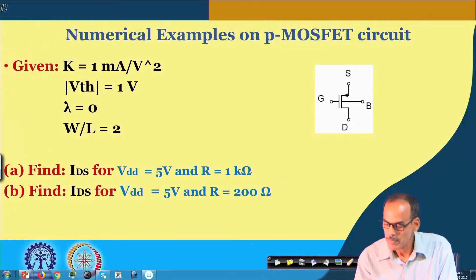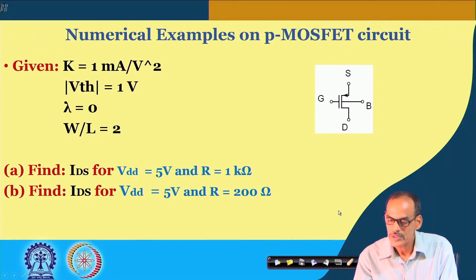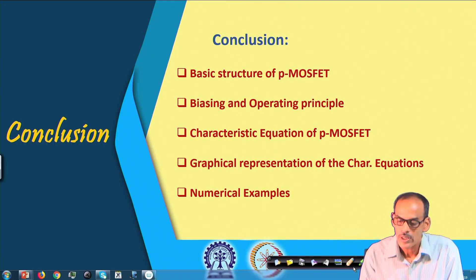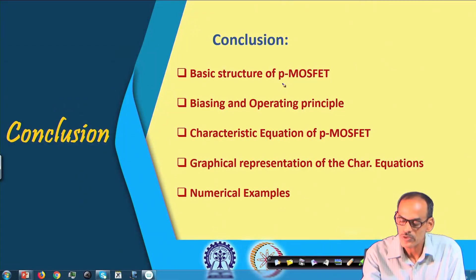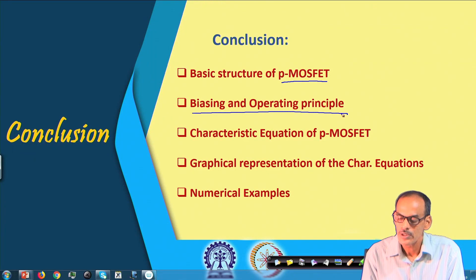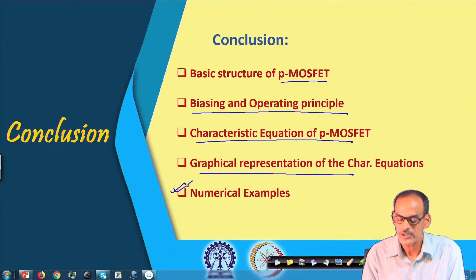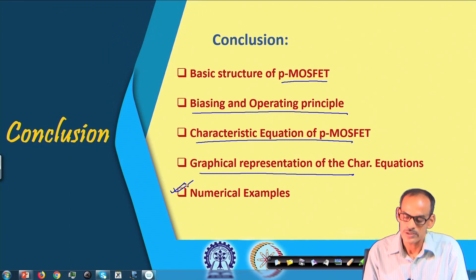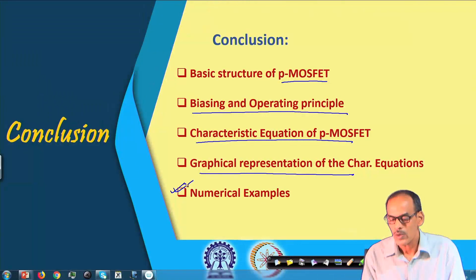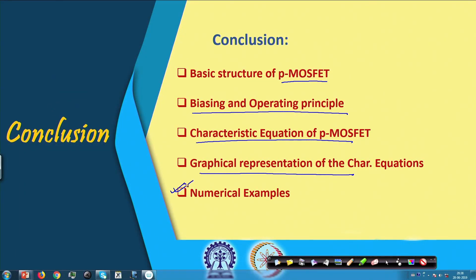That is all we need to cover related to the device. What we have covered so far: the basic structure of PMOS compared with NMOS, biasing and operating principle of the PMOS transistor, I-V characteristic equations, graphical representation of the characteristic equation, and some numerical examples to find current under certain bias conditions. This ends our prerequisite; from the next module we will directly go into analog electronics in detail, starting with simple circuits.